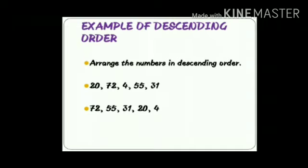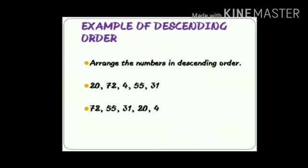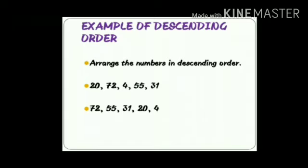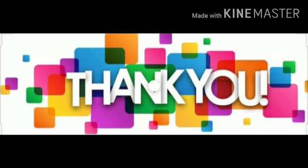Now in the same way we will see one example of descending order. Arrange the numbers in descending order. The question is: 20, 72, 4, 55, and 31. We have to arrange these five numbers in descending order — descending means big to small. The biggest number is 72, after that 55, then 31, then 20, and at last the smallest number, 4. We arrange from big to small. Thank you.